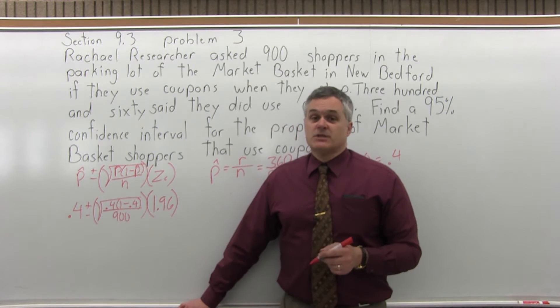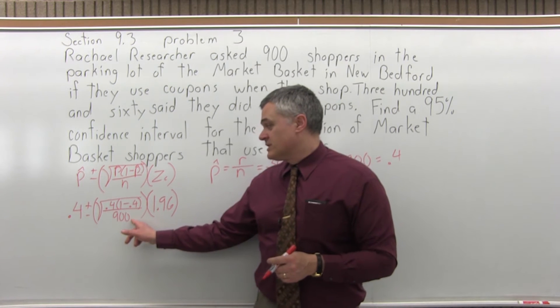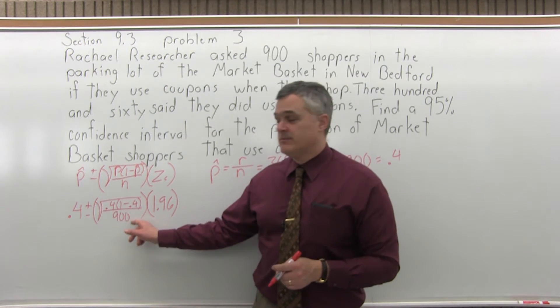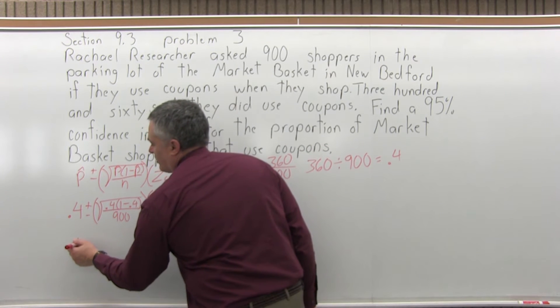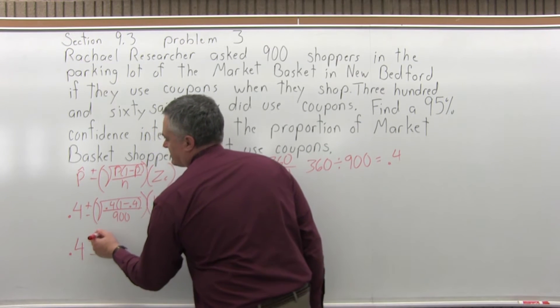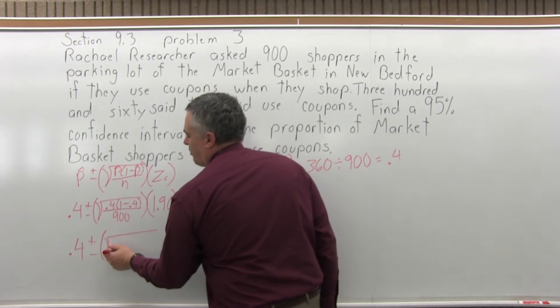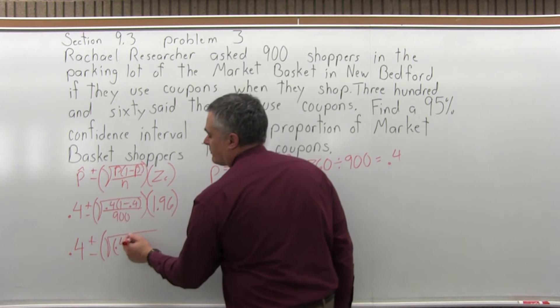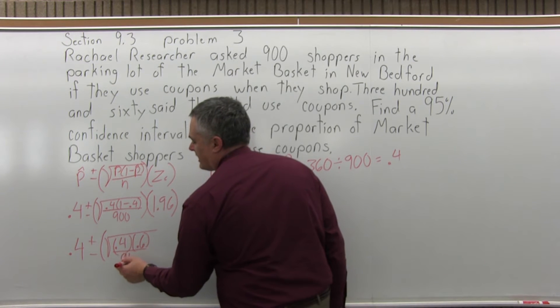So that's how it fills in. Now we start doing the computation. What I'd like to do first is work down the stuff in the square root. So we'll have 0.4 plus or minus the square root of 0.4 times 1 minus 0.4 is 0.6 over 900.